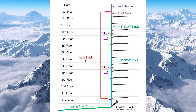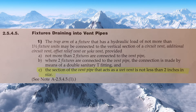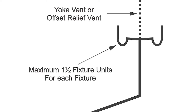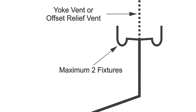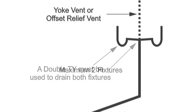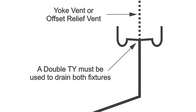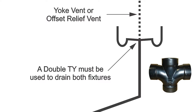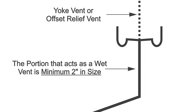Now, I am able to connect fixtures into the yoke vent, and I would have to reference Clause 2545, which I'm going to flash up on the screen and you can read through on your own. I will give you the bullet points though. First, I can only connect fixtures that are maximum 1.5 fixture units to the yoke vent. Second, I can only put two of these fixtures into the yoke vent. Third, where I have two fixtures, they need to be connected by a double TY connection. And the last one, the drainage portion that acts as a vent needs to be minimum two inches in size.